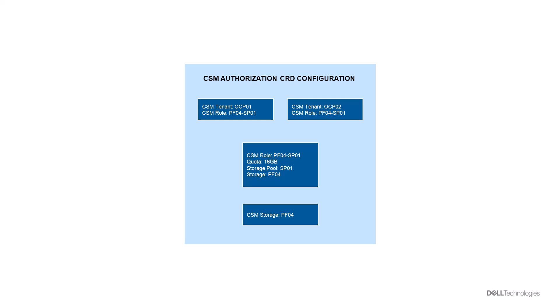We can review the CSM Authorization configurations we are going to implement. We'll create a Storage resource to represent our PowerFlex storage array, then create two different CSM Tenant resources — one for OCP01 and one for OCP02. Next we'll create a CSM Role which will allow the consumption of 16 GB of storage from storage pool SP01 from our PowerFlex storage array, then bind this role with tenants OCP01 and OCP02.